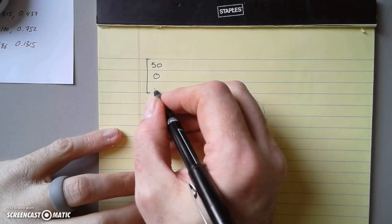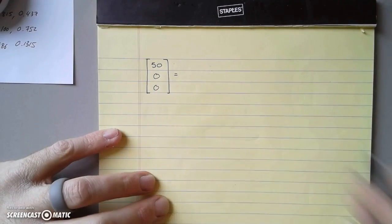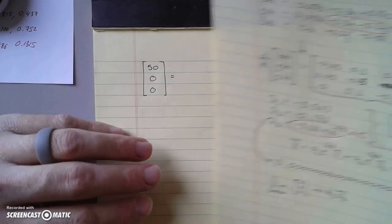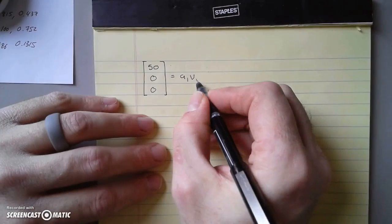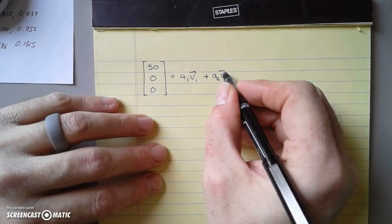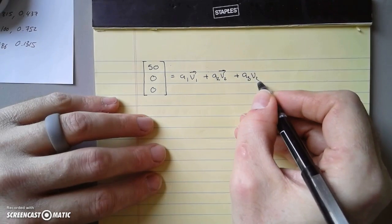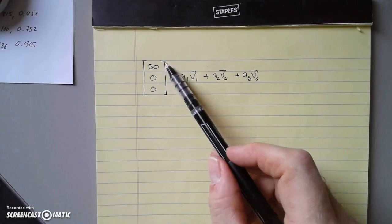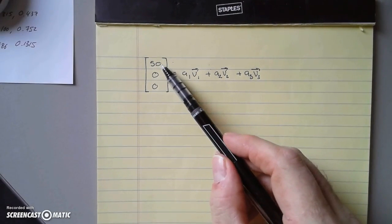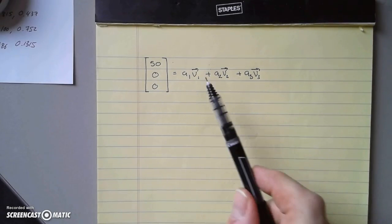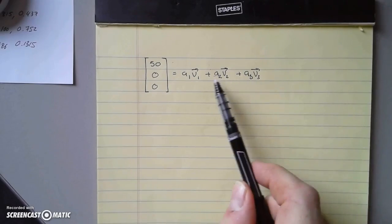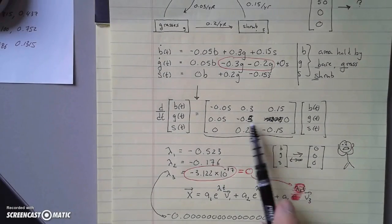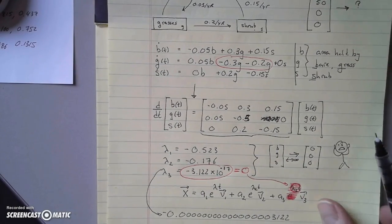Initially the bare ground is 50 units of area, there's no grass, there's no shrubs. When we plug in zero for time, notice how all the exponentials go to one. So what are we left with? We're left with a1*v1 plus a2*v2 plus a3*v3. In a very real way, what we're saying is we need to know initially how to write this vector, which has components of bare space, grassy space, and shrubby space, in terms of these kind of abstract directions - these eigen directions. These directions are in some sense the best directions to think about in terms of this matrix. They're the most natural directions - they're not very natural for us humans however.